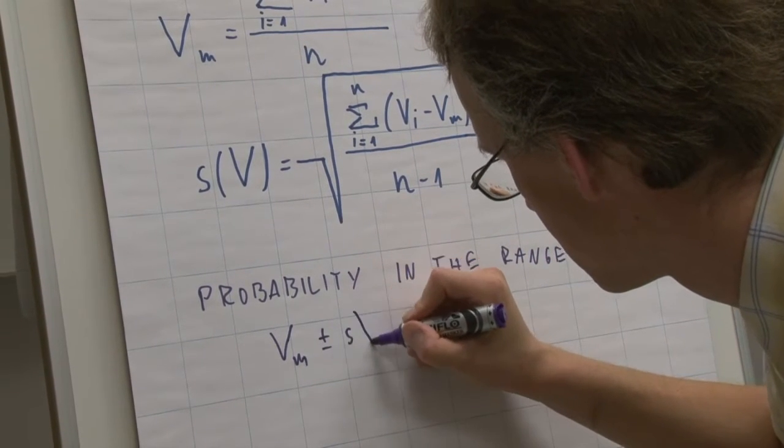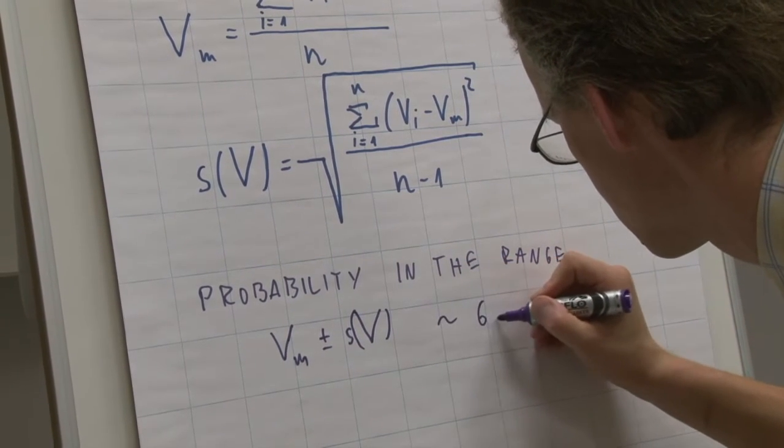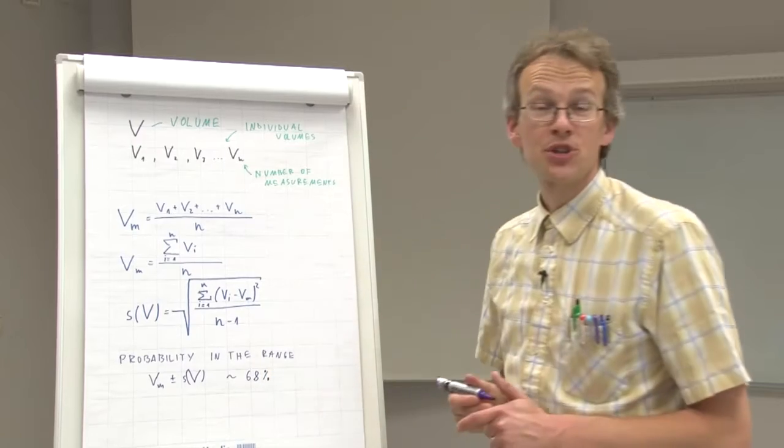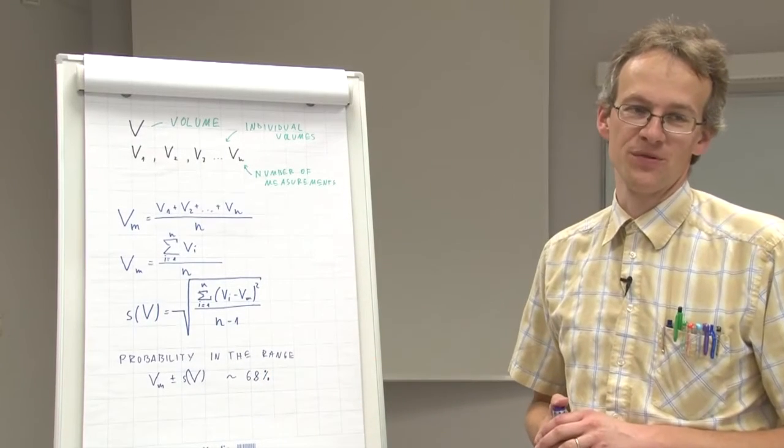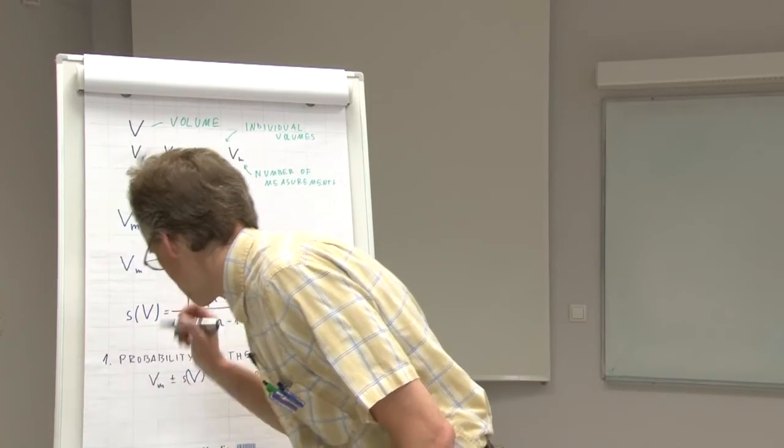This percentage comes from the properties of the normal distribution function. So this is the first important thing.